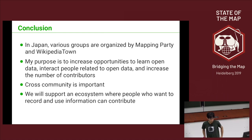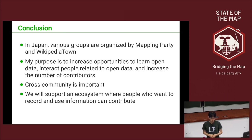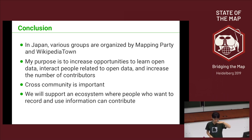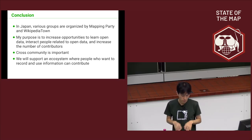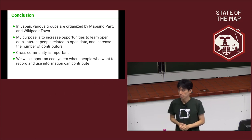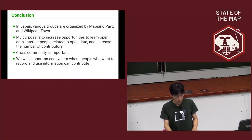Conclusion: in Japan, many locations and various groups organize mapping parties and Wikipedia-town events. My purpose has three points: increase the opportunity to learn open data, interact with people related to open data, increase the number of contributors, and cross-community collaboration. We will support an ecosystem where people who want to record and use information can contribute. Thank you, it's finished.